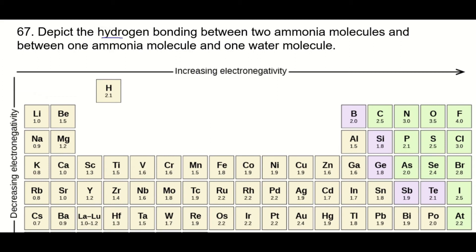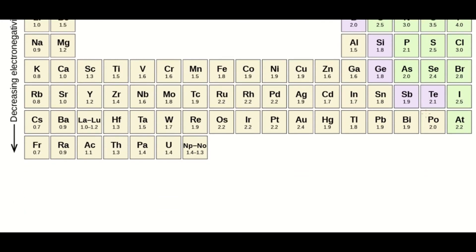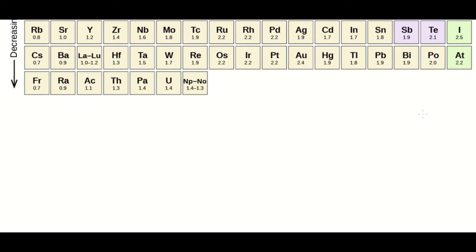Let's talk about hydrogen bonding and show how that occurs between two ammonia molecules as well as ammonia and water molecules. So these are all polar molecules, and that's what you need for hydrogen bonding to happen. So let's simply define hydrogen bonds first.